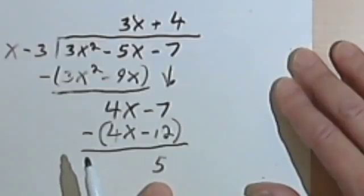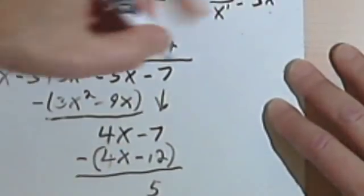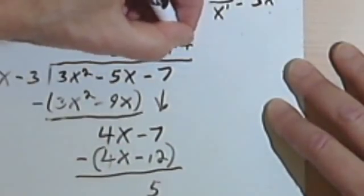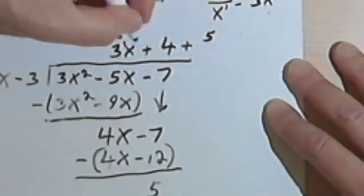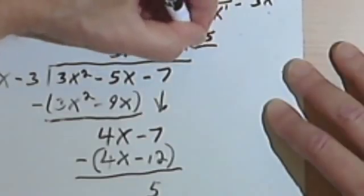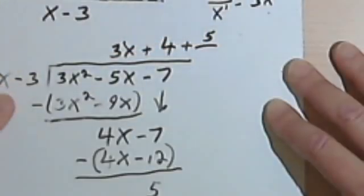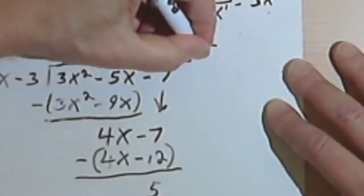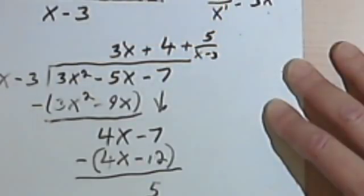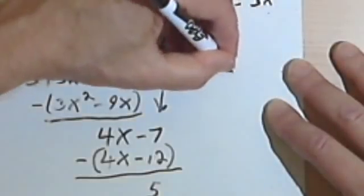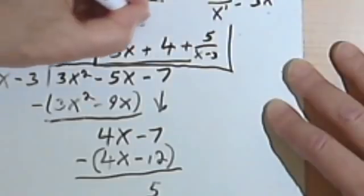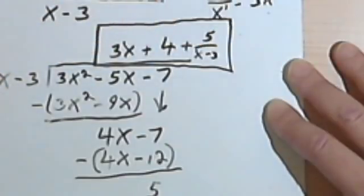What we do with the remainder is we add it to the answer here as a fraction. So I'm going to get 5 over the divisor, x - 3. That's going to be my answer.